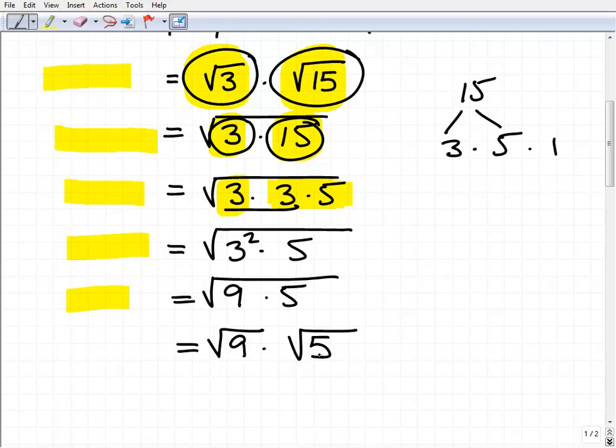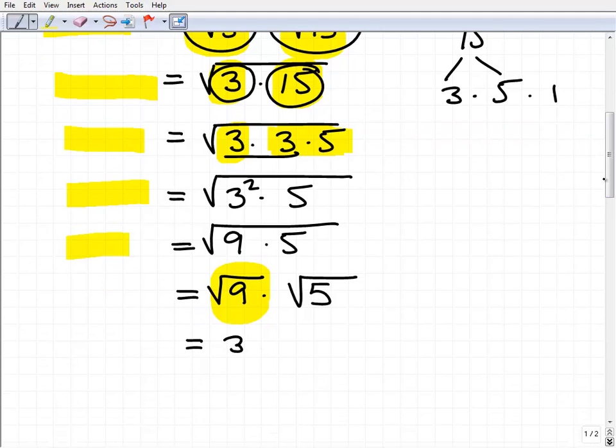So you can see, or at least hopefully you notice, that the square root of 9 we can write as 3. So that's going to be 3. Let me go ahead and just write this down a little better. 3 times the square root of 5. And now this is the simplest form.